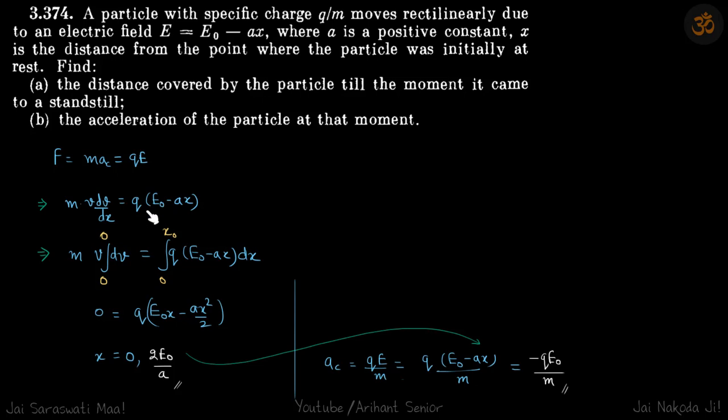By cross multiplying and integrating, the limits of velocity start at zero and end at zero, and the distance starts from zero to x naught, the distance covered.